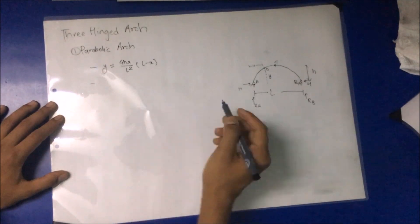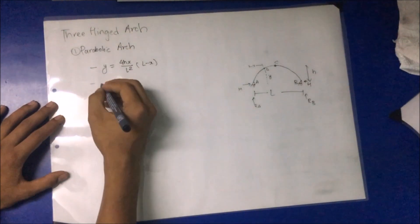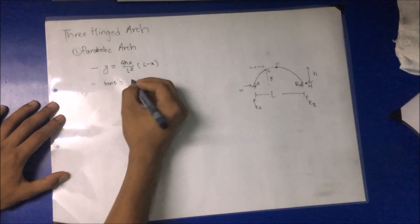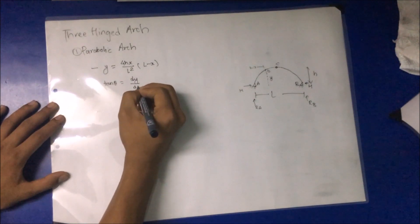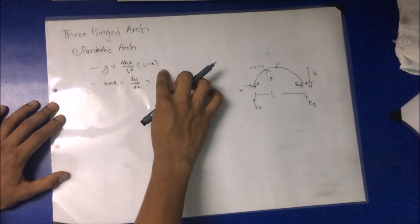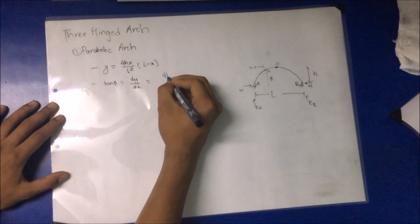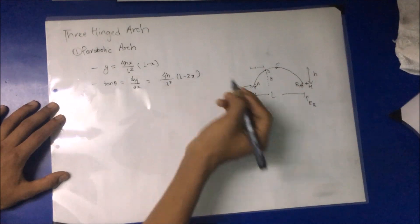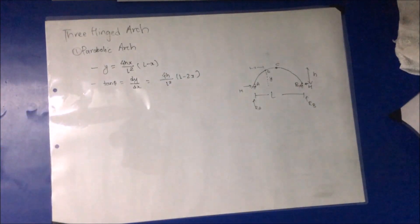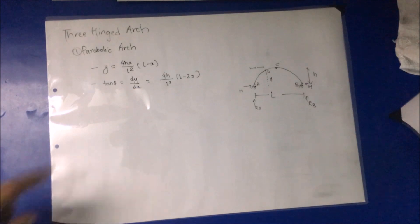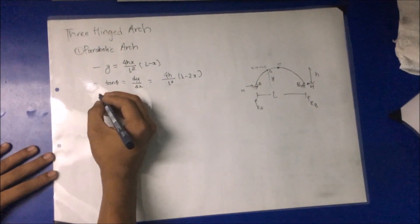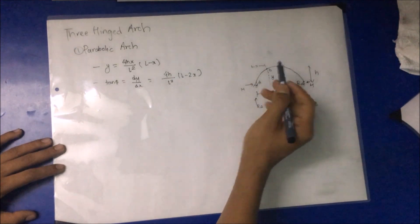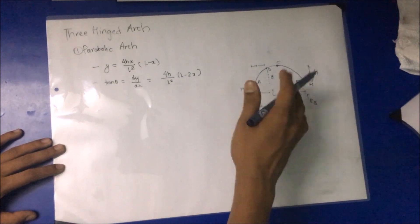To find the value of theta, tan θ = dy/dx. Differentiating the Y equation we get 4H / L² · (L − 2X). This is the formula for determining theta.